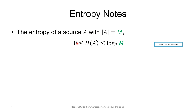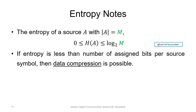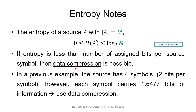Some important notes: the entropy of a source A with cardinality M is always bounded between zero and log₂(M). If entropy is less than the number of assigned bits per source symbol, then the data can be compressed. For example, if we have four symbols representable in two bits, but entropy is only 1.6477 bits, the data can be compressed.